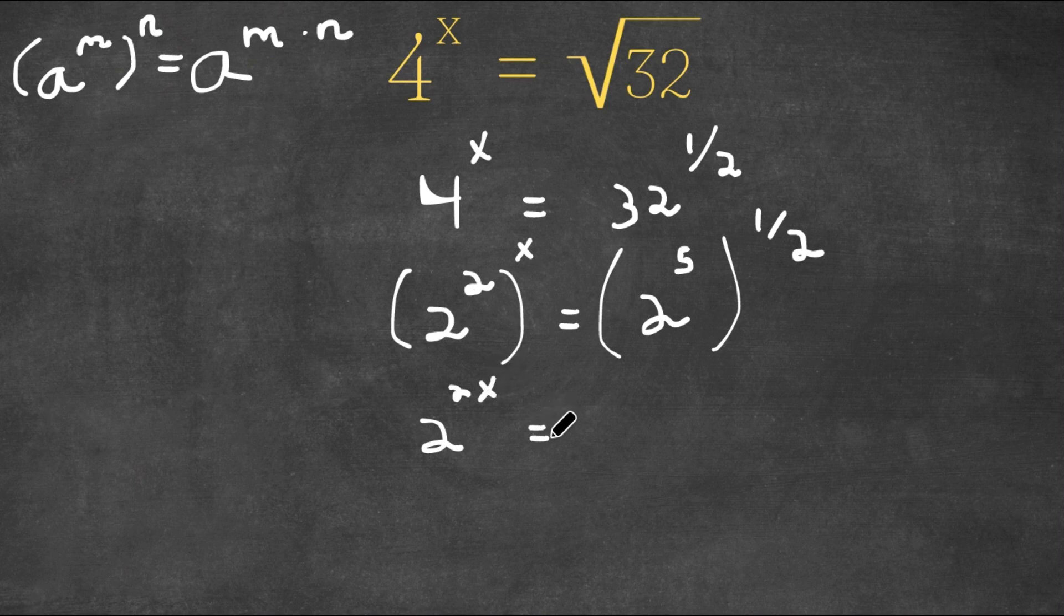Now, this is equal to 2 to the power of 5 to the power of 1 half. This would equal 2 to the power of 5 times 1 half, which is simply just 5 over 2.